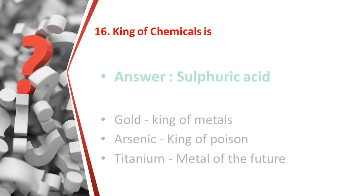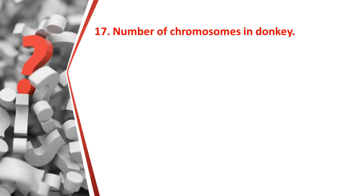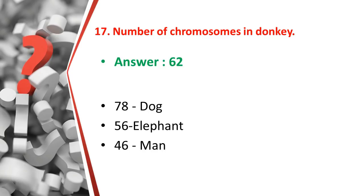The sixteenth question: what is the king of chemicals? The answer is sulfuric acid. Related facts: the king of metals is gold, the king of poison is arsenic, and the metal of the future is titanium. So sulfuric acid is the king of chemicals.